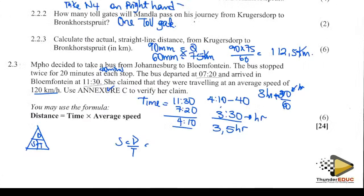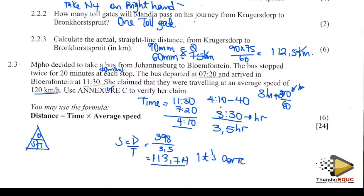We have 113 km/h — so the calculation is correct. The verification shows the claim is approximately correct. This marks the end of question number two.